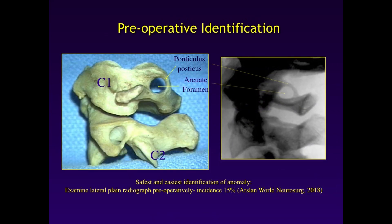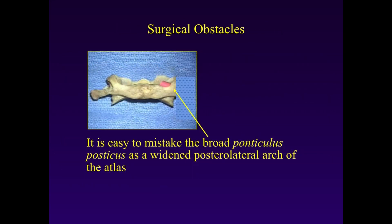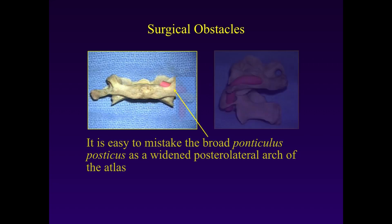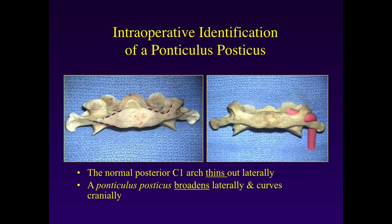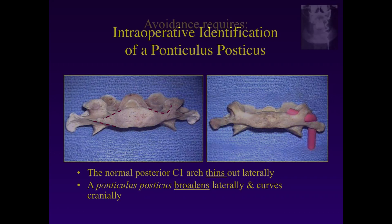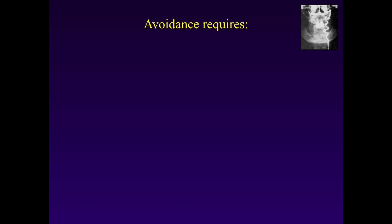Another important anatomical variant is the ponticulus posticus, due to complete or incomplete ossification. It is easy to mistake the broad ponticulus posticus for a widened posterior lateral arch of the atlas, and during dissection you could inadvertently injure the vertebral artery. The normal C1 posterior arch thins out laterally, but a ponticulus posticus broadens laterally and must be identified to avoid vertebral artery injury. Avoidance requires knowing the anatomy — especially abnormal anatomy — of the vertebral artery. Examine the vertebral arteries on axial MR and CT at the planned operative level, and if at risk, find and protect it.